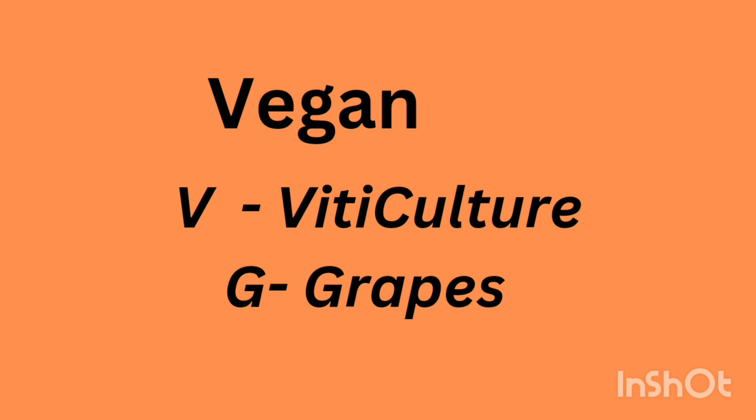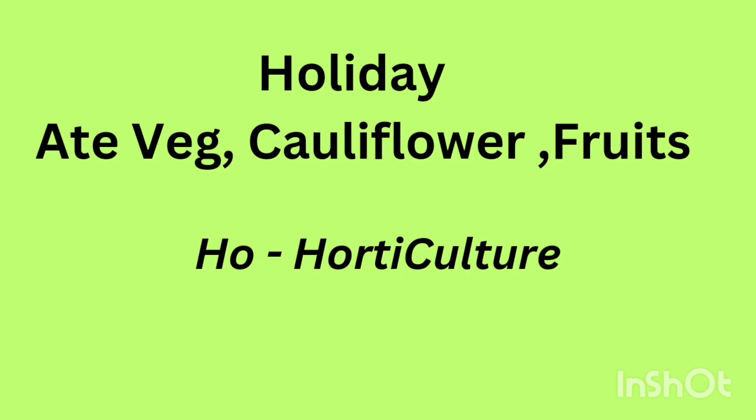In the shortcut I have mentioned 'vegan.' Here 'V' stands for Viticulture, and 'G' stands for Grapes. Then 'during holiday she ate only vegetables, cauliflower, and fruits' — here 'H-O' stands for Horticulture. Horticulture refers to the growing of vegetables, flowers, and fruits.